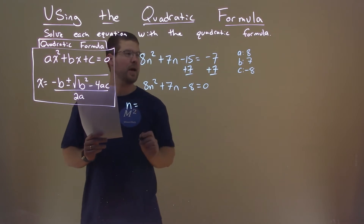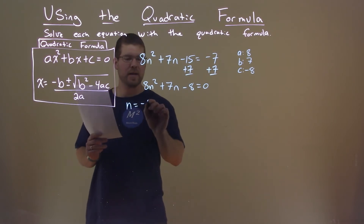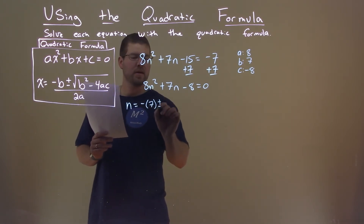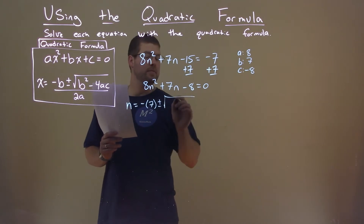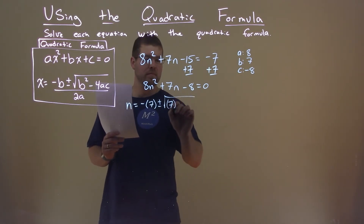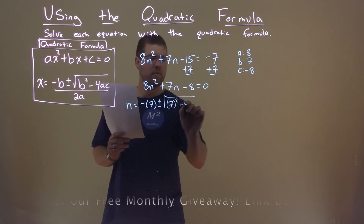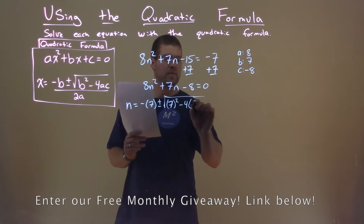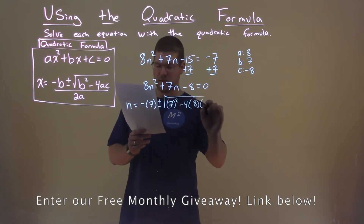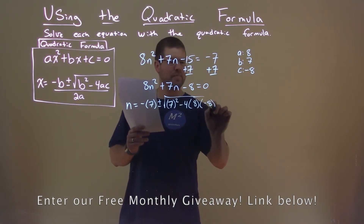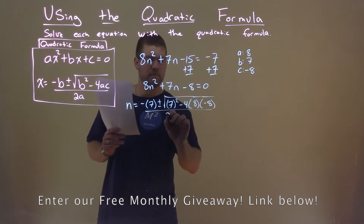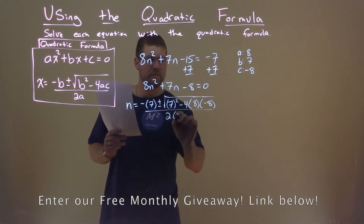Plug them in. n equals negative b, so minus 7, plus or minus the square root of b squared — so 7 squared — minus 4 times a, which is 8, times c, which is negative 8, all over 2a.